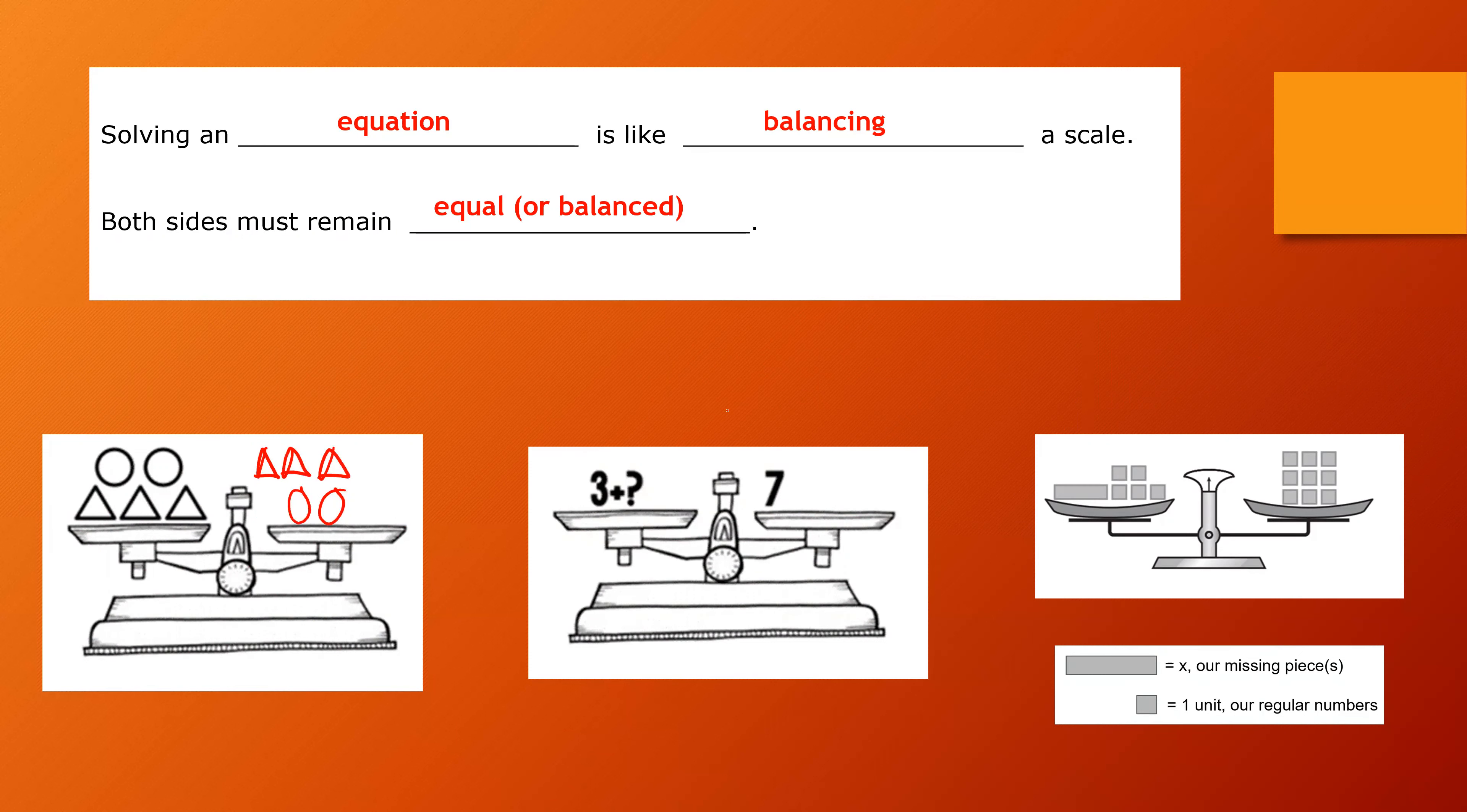In my middle one, I have three plus a question mark has to be balanced or equal to the number seven. So what number do I need to fill in for this question mark? I'm going to get rid of the question mark and it's going to be a four. Three plus four is seven, and so then seven equals seven.